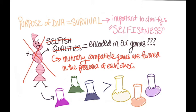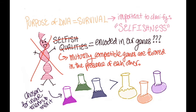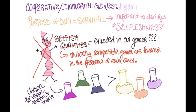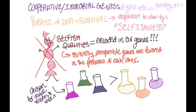Yet Dawkins even admitted that naming the book 'the cooperative or immortal genes' would have been a better option, with the latter title upholding his argument that the digital information in a gene is effectively immortal and the primary unit of selection.